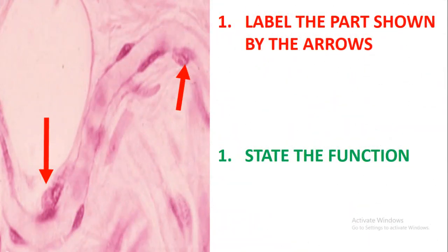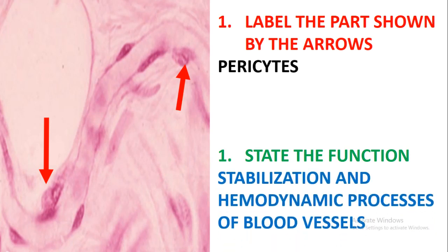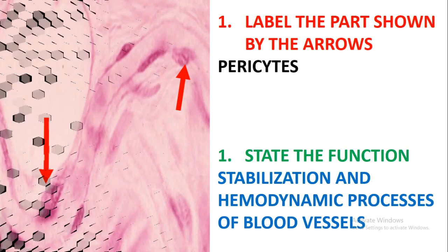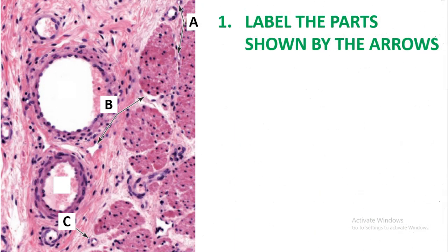Label the parts shown by the arrows. These arrows are pointing at the pericytes. The function of the pericyte is to stabilize and regulate the more dynamic processes of blood vessels.